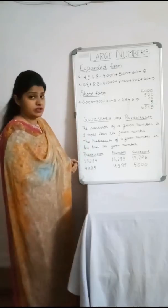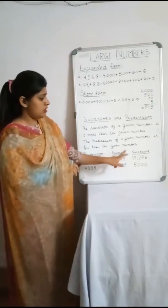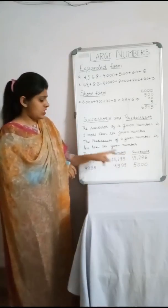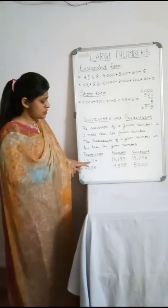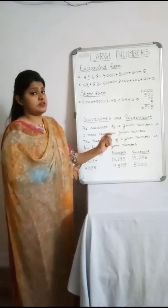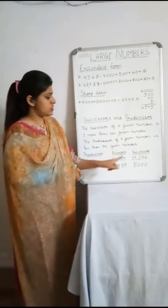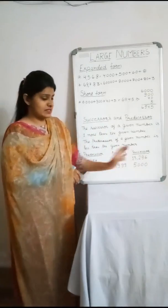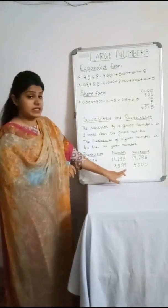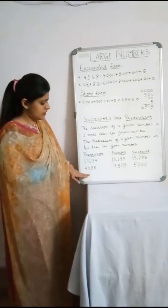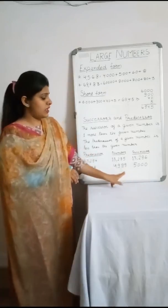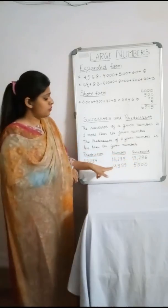Let's look at the examples. For the number 13,295: the predecessor is 13,294 — one number less; and the successor is 13,296 — one number more. For the number 4,999: the predecessor is 4,998, and the successor is 5,000 — one number more than 4,999.